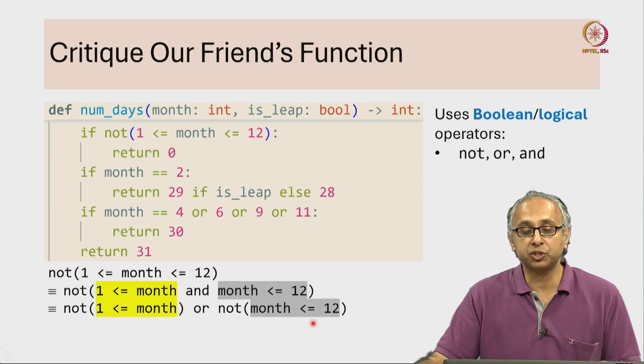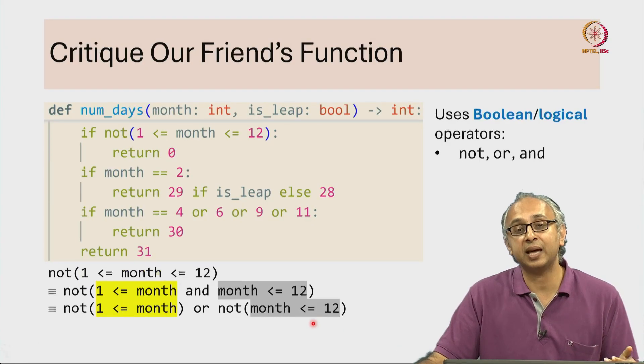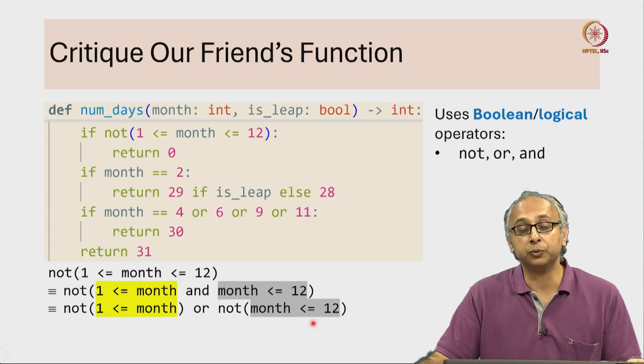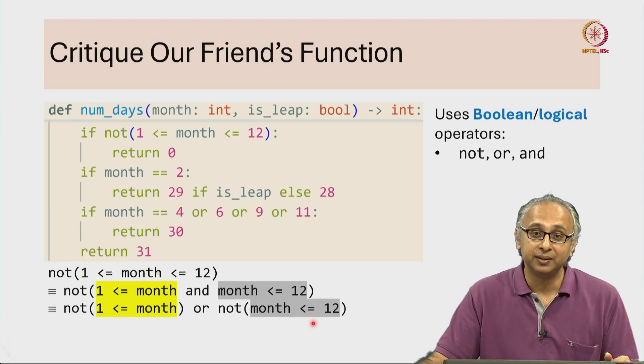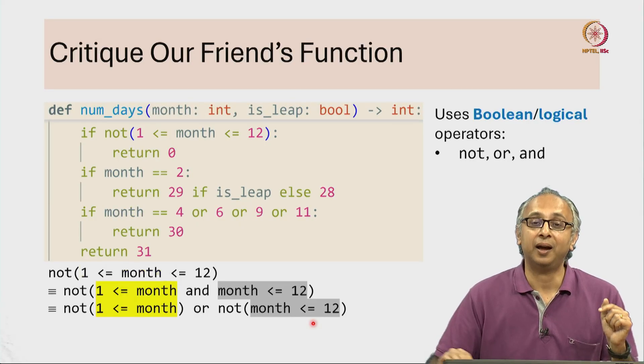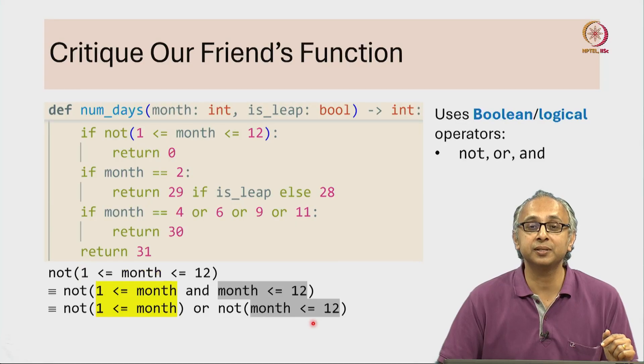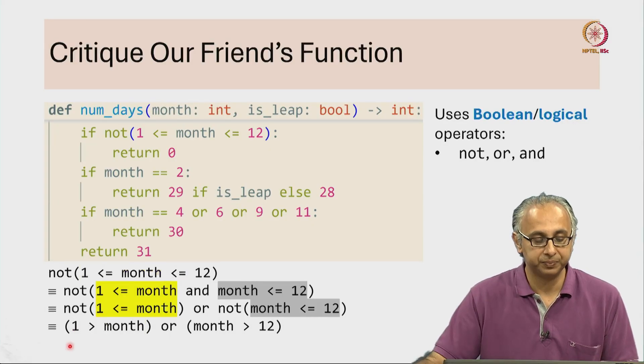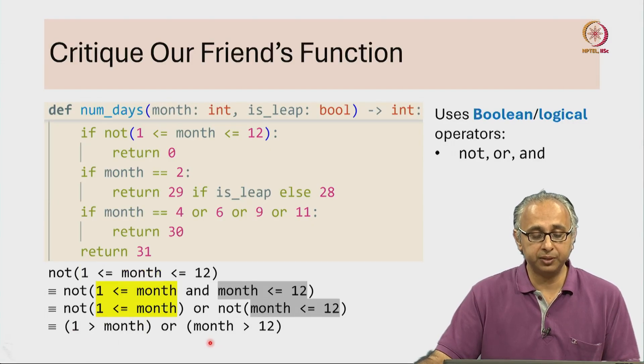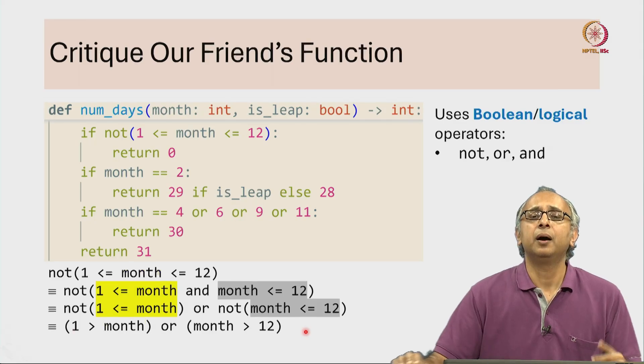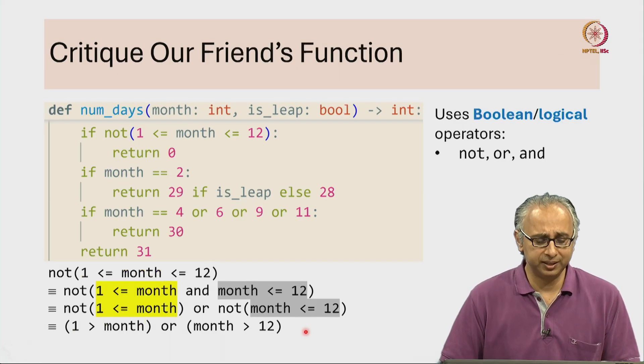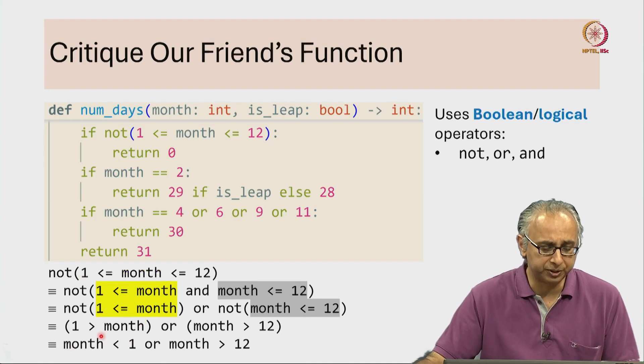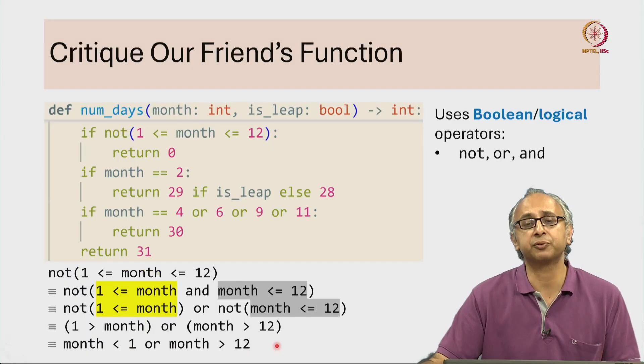Similarly, this condition is month less than or equal to. So the opposite of that, think about it. I will show what it is and I hope you did not get surprised. I hope that is what you were expecting. So this is 1 is greater than month or month is greater than 12. A perhaps easier way of writing it is flip the order here: month is less than 1 or month is greater than 12. Now you notice in the previous expression I did put brackets.